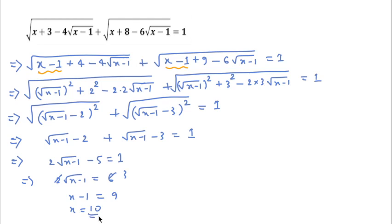So you get only x = 10. But other values are also possible for x — so how do we find them? That is the main problem.